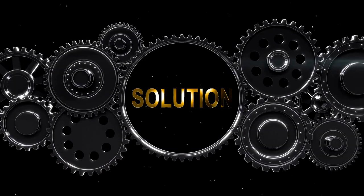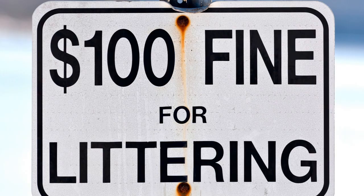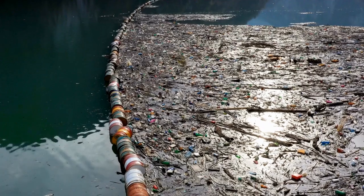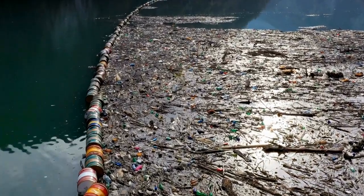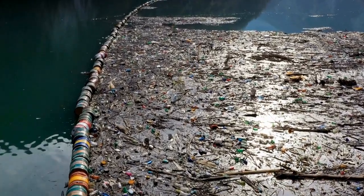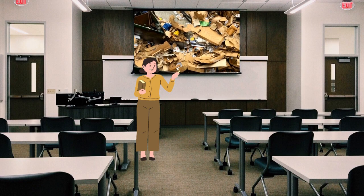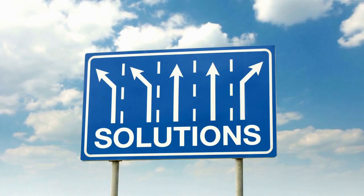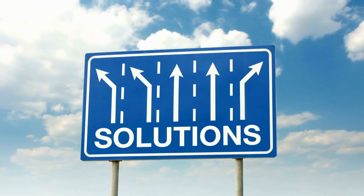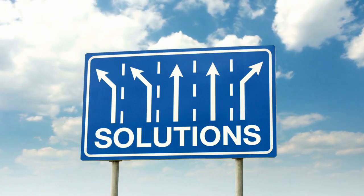We could come up with different solutions, like enforcing stricter pollution laws, creating barriers to prevent dispersal of pollutants, or educating people about responsible waste management. But how do we decide which solution is the best? Here's where we need to weigh our options and evaluate these competing design solutions.